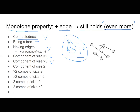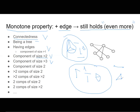Similarly, having a component of size more than three is monotone. But having a component of size exactly two is not monotone. If you have a component of size two and you add an edge connecting it to another component, all of a sudden the component size increases and you no longer have a component of size exactly two. So this is not a monotone property.